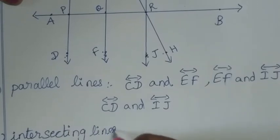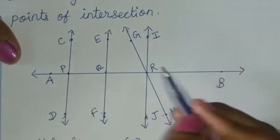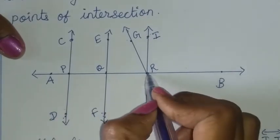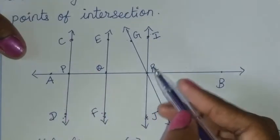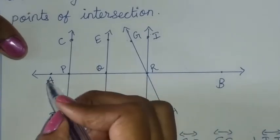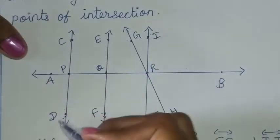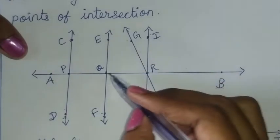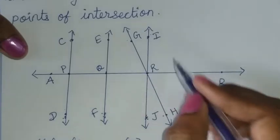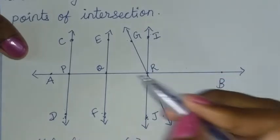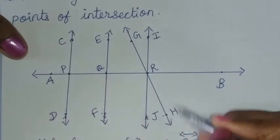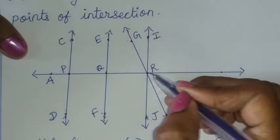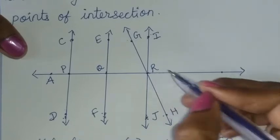Intersecting Lines are lines that cross each other. There are two intersecting lines. Three sets of lines intersect in this area. AB and GH intersect in this area. AB and IJ intersect in this area. Then GH and IJ intersect in this area. So we have three pairs of intersecting lines.